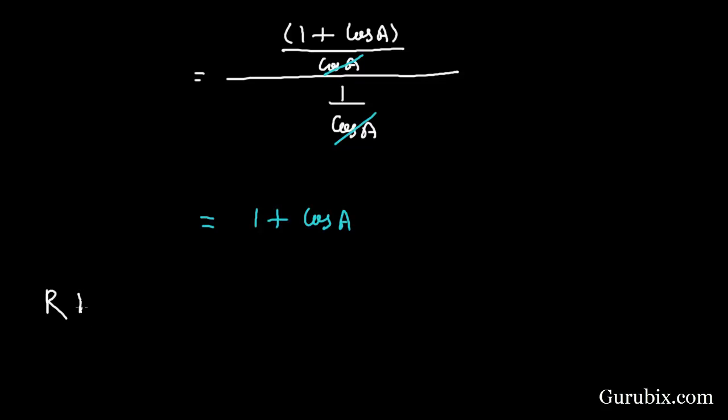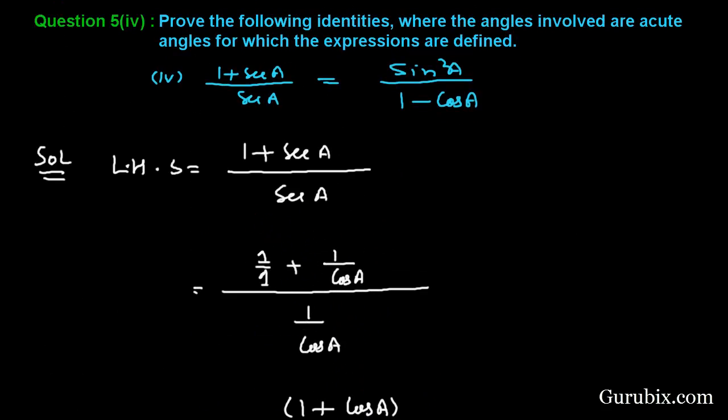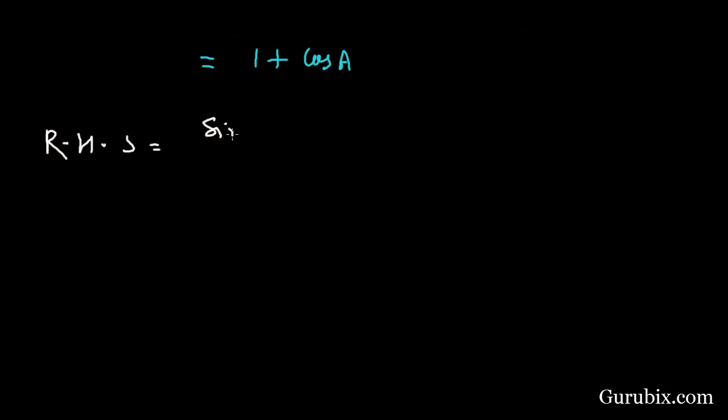The right hand side is given as sin² A over (1 - cos A). Sin² A over (1 - cos A), and we can write this sin² A...